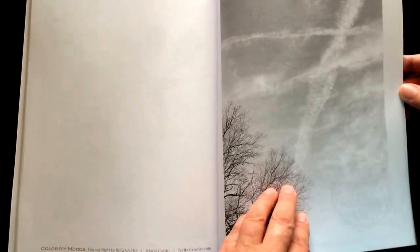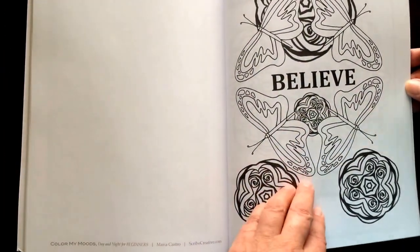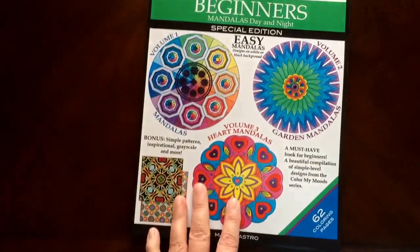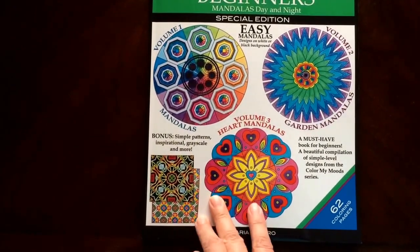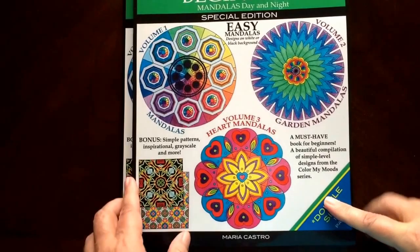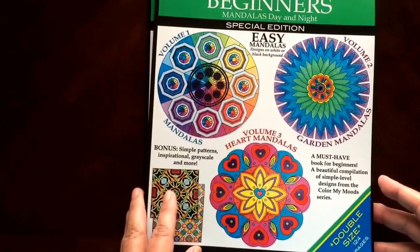I'm going to get some grayscale bonus pictures here in the back. And there's a couple pages for you to test out your colors on. And there you have it, Color My Moods Beginners, the 62 pages and the 124 pages. I will have links for both in the description.